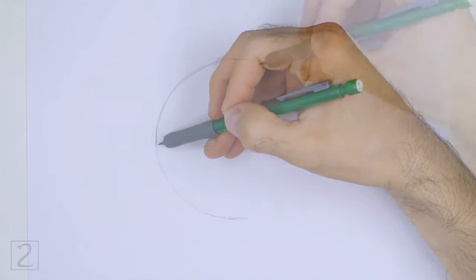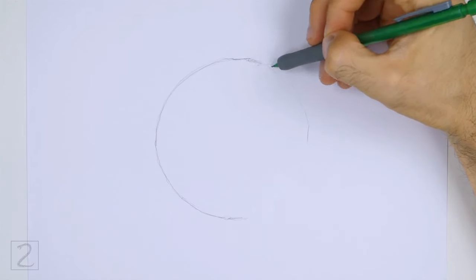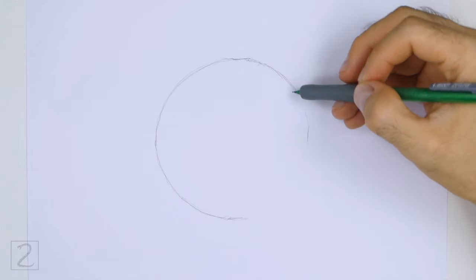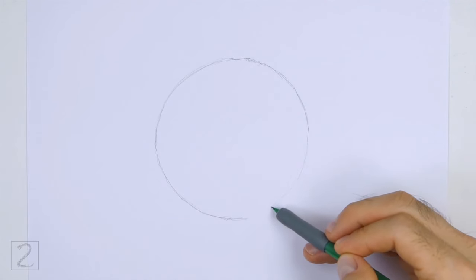Sketch lightly at first so that it's easy to erase if you make a mistake. Also, pause the video to draw at your own pace. The circle doesn't have to be perfect, but if you're having trouble drawing it, just trace the outer edge of a cup, a bowl, or anything else with a circular edge.